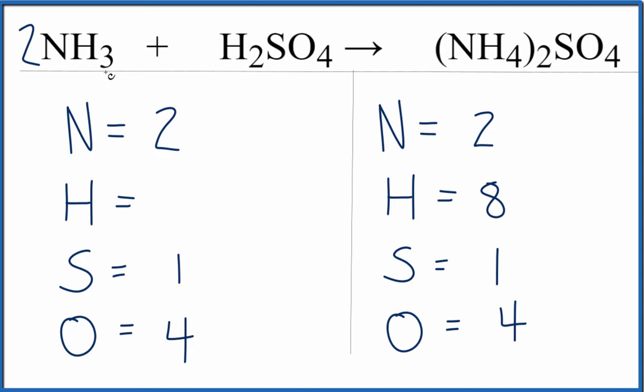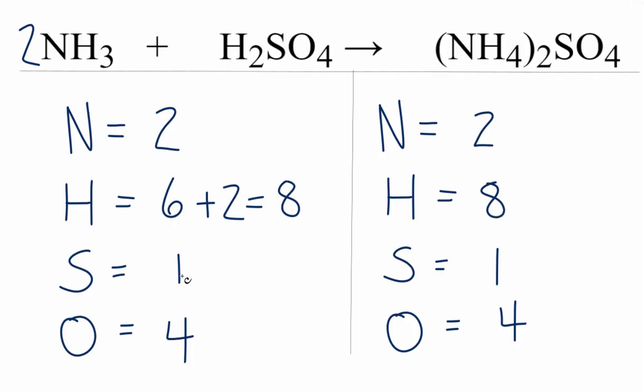And then the hydrogens, I have the three here times the two, so I have six plus, I still have these two hydrogens over here. That gives me eight, which is very good because now I have eight on both sides. The sulfur stays the same, oxygen stays the same. So that actually ends up balancing this equation.